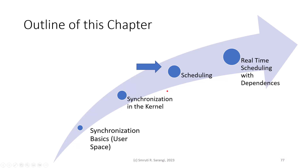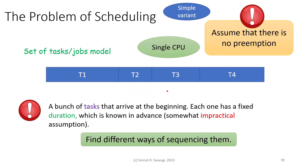Welcome to this short lecture on scheduling. Scheduling is by far the most well-researched and well-established area in a large part of theoretical computer science and operating systems. We would assume that there is a single CPU and we have a bunch of tasks. Every task is also called a job, and the model is known as a set of tasks, or a set of jobs, or a bunch-of-tasks model.